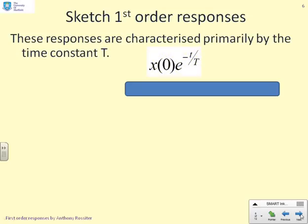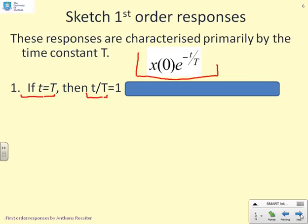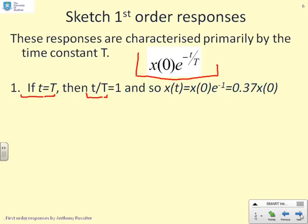Now, let's have a look at how these responses look on a graph. We know the response is x(0) e^(-t/T), but what does this look like when we sketch it? I'm going to substitute in some key values of t. Time equals capital T. If I do that, then t/T becomes 1. I substitute that into the equation x(0) e^(-t/T), and I get x(t) = x(0) e^(-1). e^(-1) I can compute with my calculator, and I get 0.37 x(0). That 0.37 is going to be quite important. We're saying e^(-1) approximately equals 0.37, and that's a key value to remember.